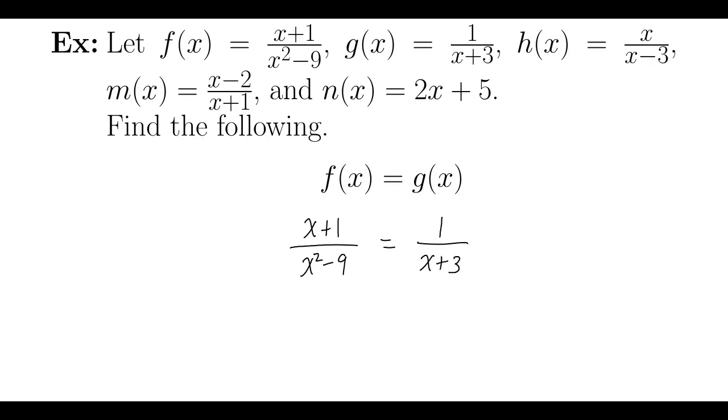The next thing to do, the easiest thing to do, is to factor the denominators if I can. On the left side I see x squared minus 9, which is difference of squares, which means it will factor as x plus 3 times x minus 3. The right side stays the same.